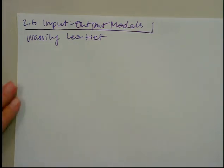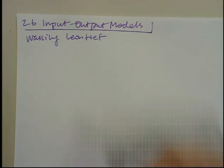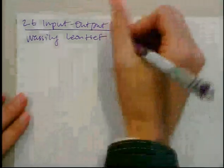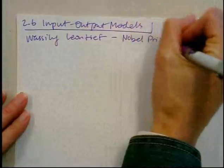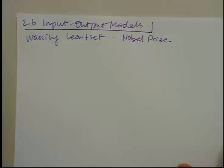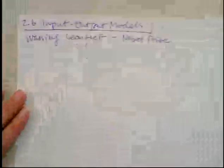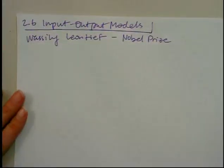We're going to work on 2.6 input and output models. We've got to give credit where credit is due — Wassily Leontief, who is an economist, won the Nobel Prize for developing matrix models to work through the input and output models for some pretty complicated market scenarios.